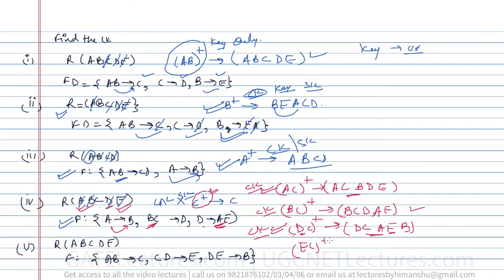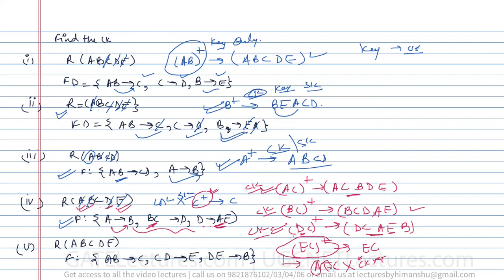Now let us try EC closure: E identifies E and C identifies C, but EC cannot identify anything else. So EC is not a candidate key. If we add another attribute — say AEC — it will not be a candidate key either, because AC alone can already identify everything, making AEC non-minimal. Similarly, BEC and DEC are not candidate keys for the same reason: they are not minimal sets.